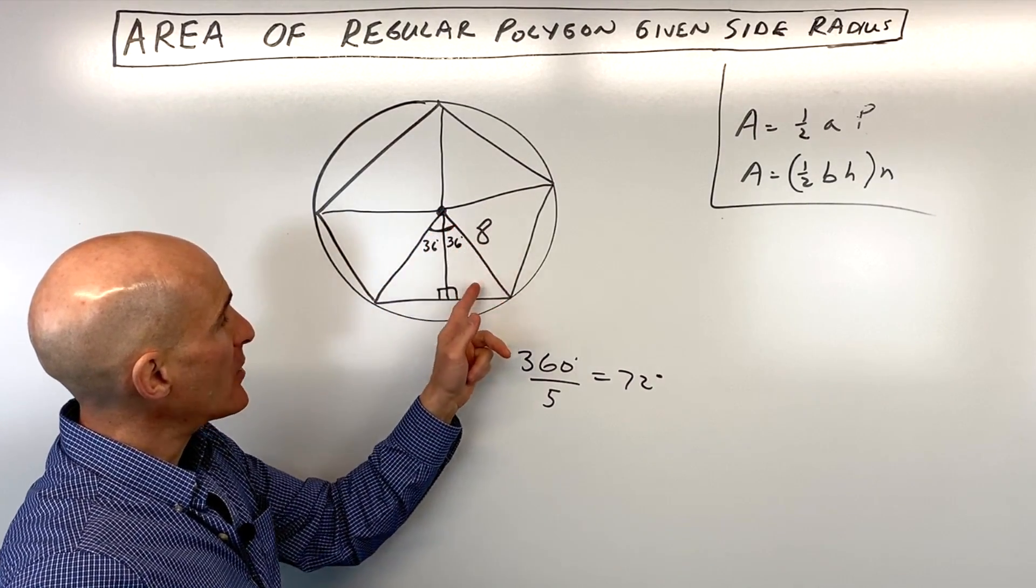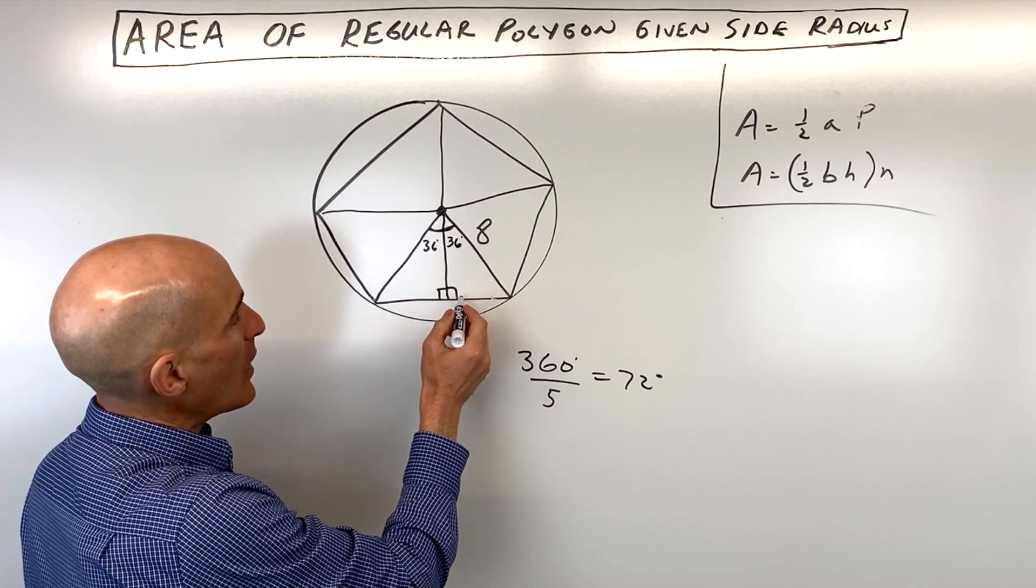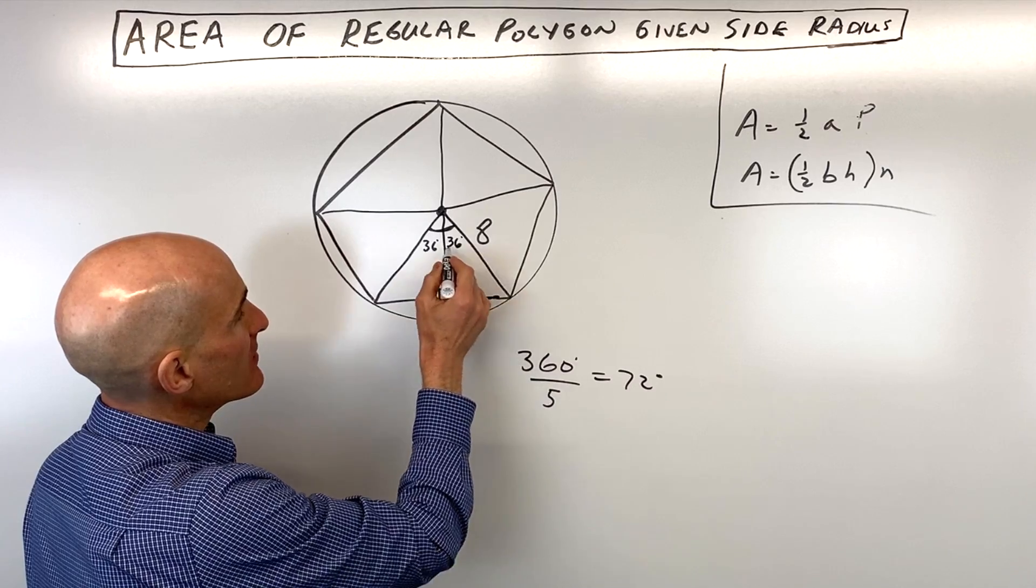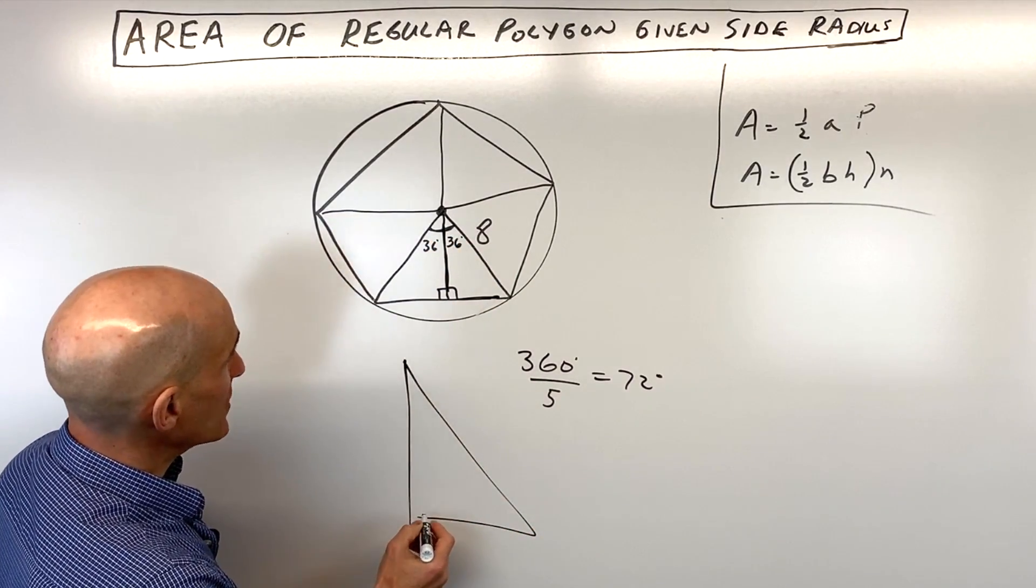And we know that the hypotenuse here is the radius, across from the right angle, that's 8, but how do we find out this side length and this side length? Well, let's go ahead and make this triangle a little bit larger so we can see it.